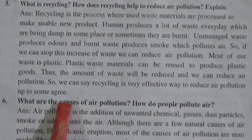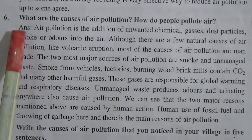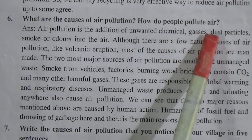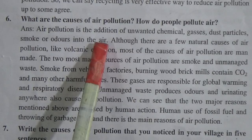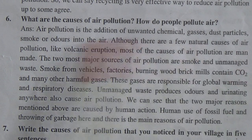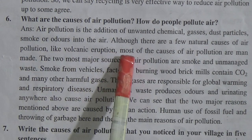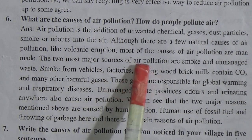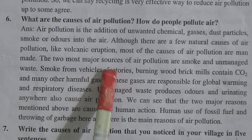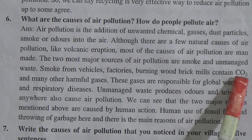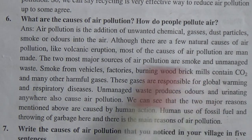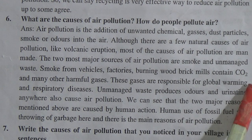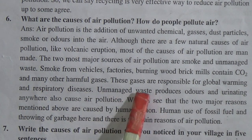The next question is: What are the causes of air pollution? How do people pollute air? The answer is: air pollution is the addition of unwanted chemicals, gases, dust particles, smoke, or odor into the air. Although there are a few natural causes of air pollution like volcanic eruption, most of the causes are man-made. The two most major sources are smoke and unmanaged waste. Smoke from vehicles, factories, burning wood, and brick mills contain carbon dioxide and many other harmful gases responsible for global warming and respiratory diseases.